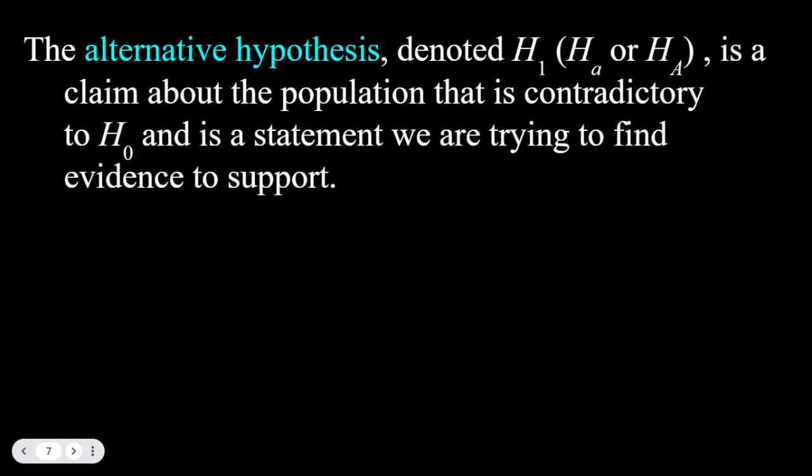The other hypothesis is called the alternative hypothesis, denoted H sub 1 in our class — though you might also see it written as H sub a or H sub A. This is a claim about the population that is contradictory to H sub 0. We're trying to find evidence to support this new claim. We will test the null hypothesis, and if the null hypothesis doesn't work out, the alternative hypothesis will have to be true.